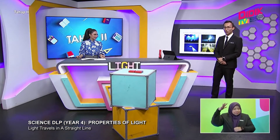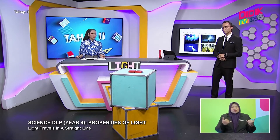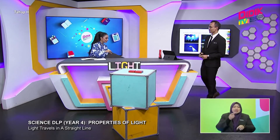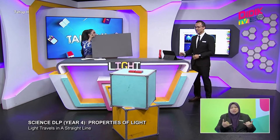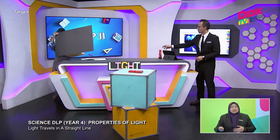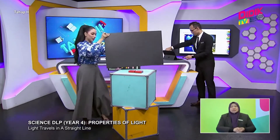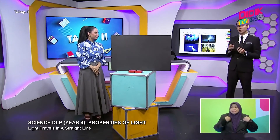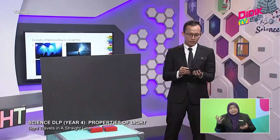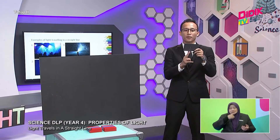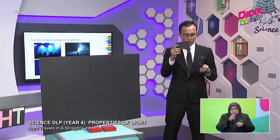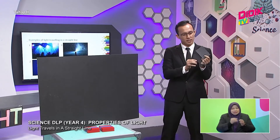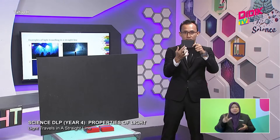Now we are going to do an experiment to show that light travels in a straight line. To help us with the experiment, I have here something that will help. Could you please bring it forward? So what I have here is three manila cards. The first manila card has a slit cut in the center. The second manila card has a slit on the left. And the third manila card has a slit on the right, or the opening.